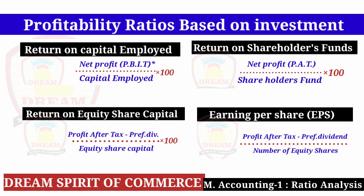Friends, our last four formulas were about Profitability Ratio Based on Investment. First formula: Return on Capital Employed equals Net Profit divided by Capital Employed multiplied by 100. Second: Return on Shareholders Fund equals Net Profit divided by Shareholders Fund multiplied by 100. Third: Return on Equity Share Capital equals Profit After Tax minus Preference Dividend divided by Equity Share Capital multiplied by 100. Fourth formula: Earning Per Share (EPS) equals Profit After Tax minus Preference Dividend divided by Number of Equity Shares.